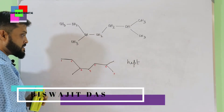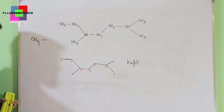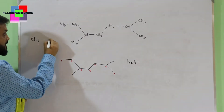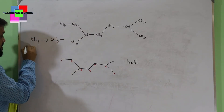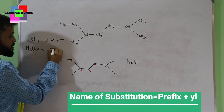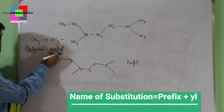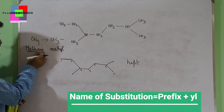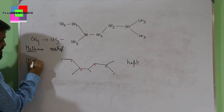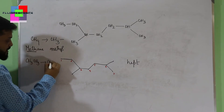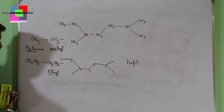Substitutions are named as follows: if you have methane and you remove one hydrogen, you get CH₃—, which is the methyl group. 'Meth' is the prefix; since it's an alkane we add '-ane', but since it's a radical we add '-yl', so it's the methyl radical. Similarly, from ethane (CH₃CH₃) we remove one hydrogen to get CH₃CH₂—, which is the ethyl group — 'eth' plus '-yl', giving ethyl.